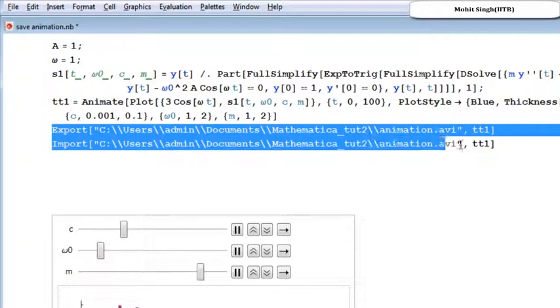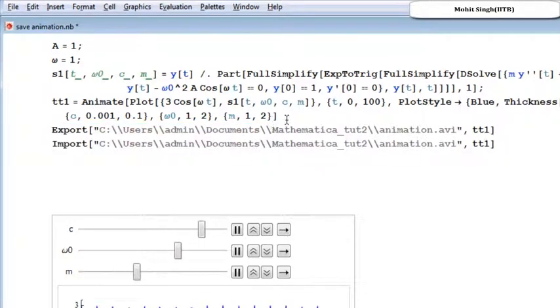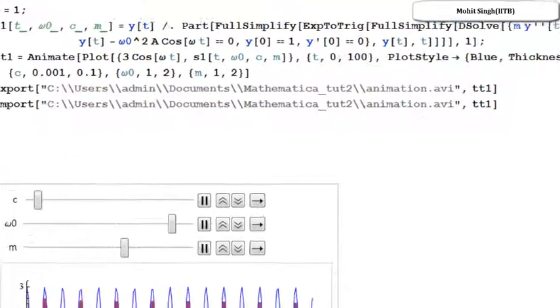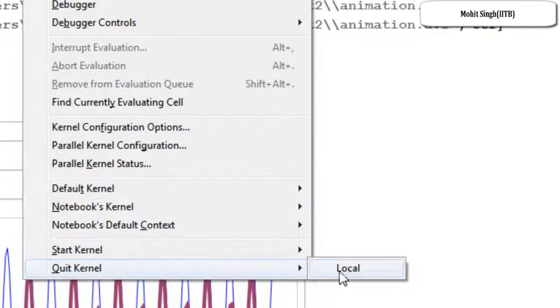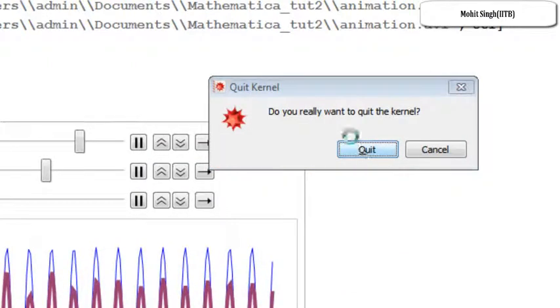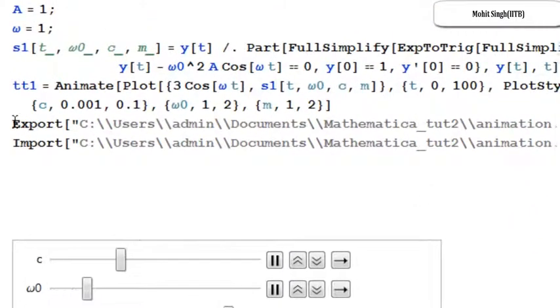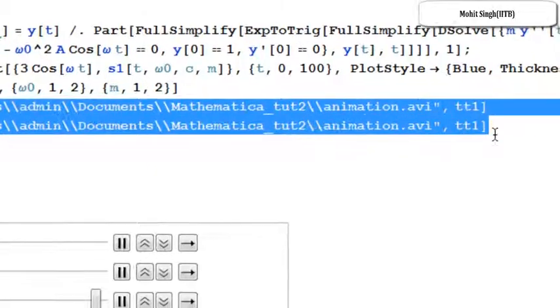So as a template I will give this mathematical file in the description box, you can download it and you can check it. Let me quit the kernel to reevaluate it. As of now I don't want to import and export.